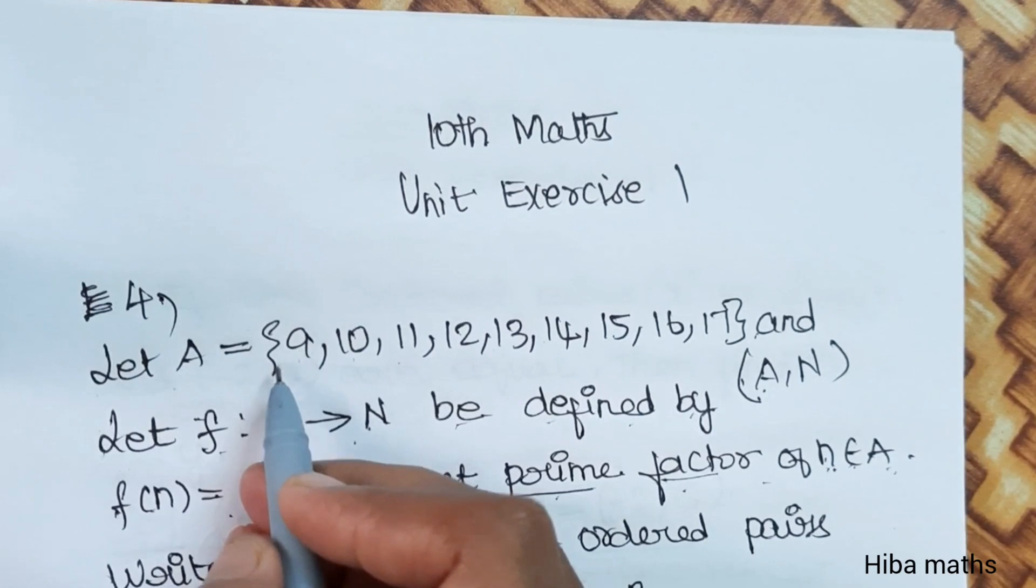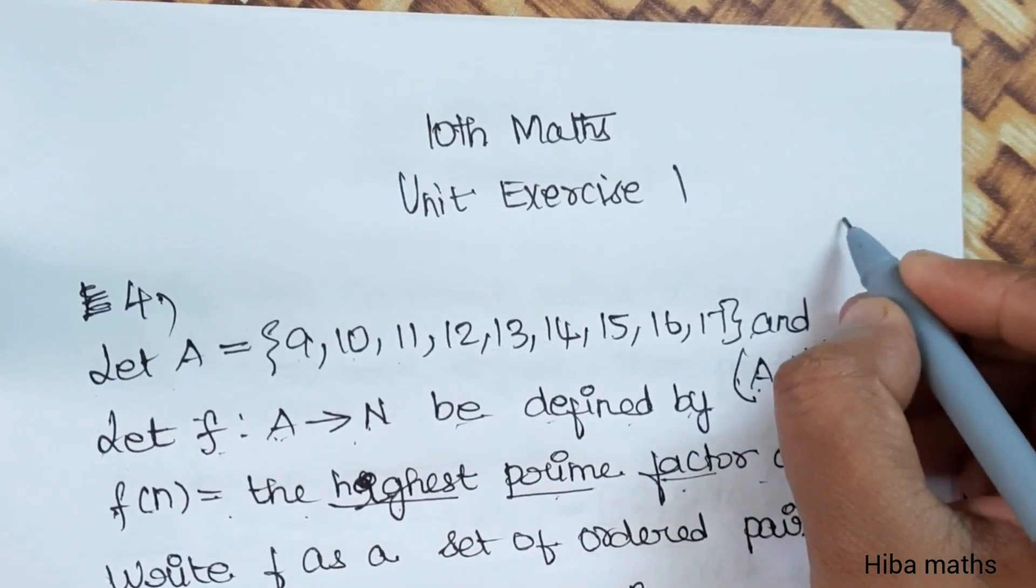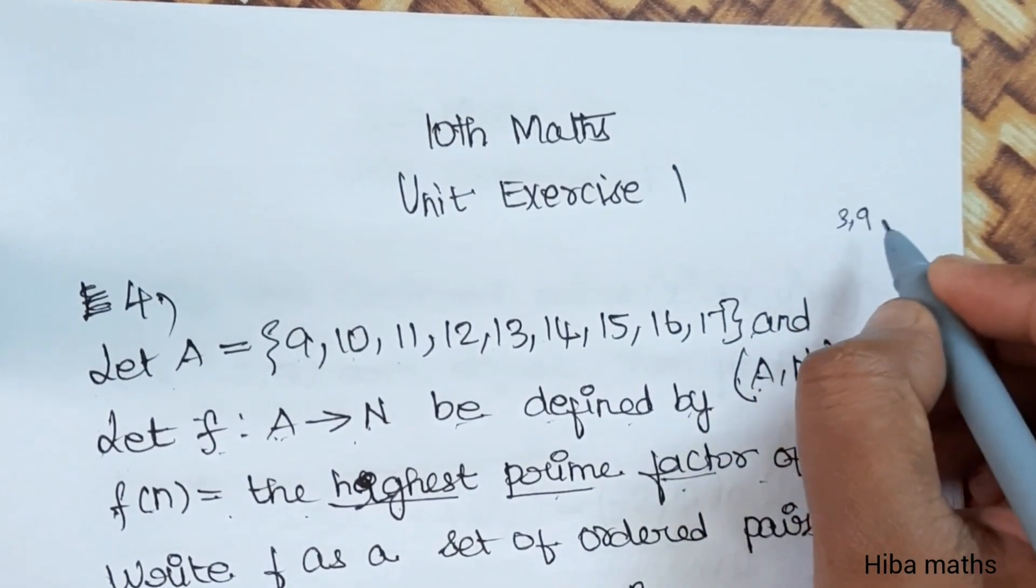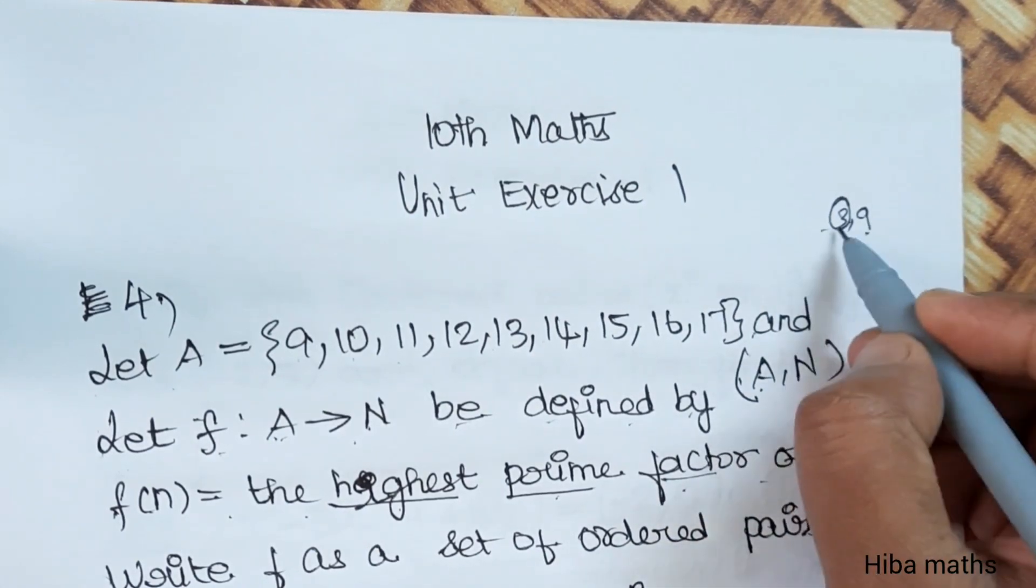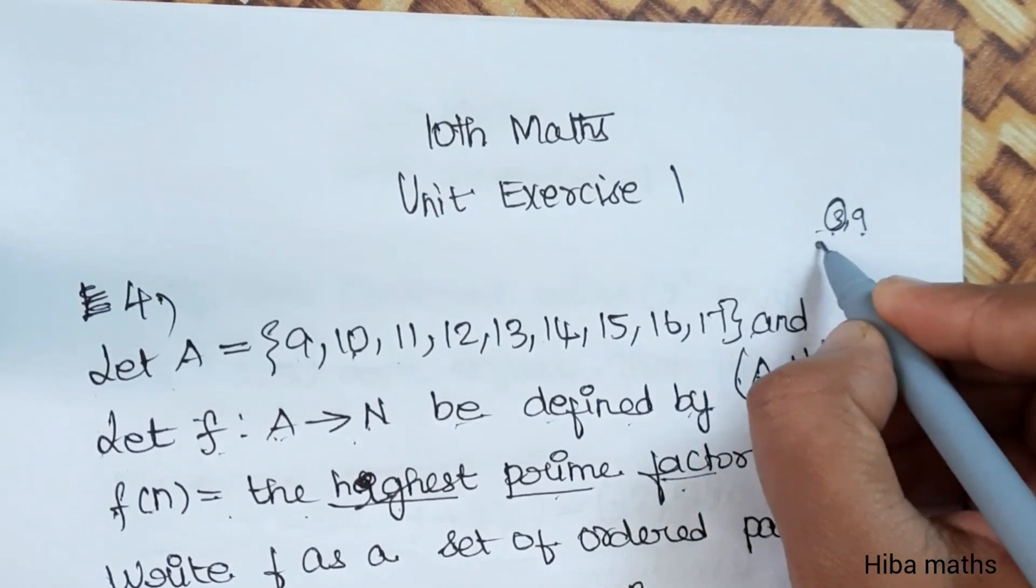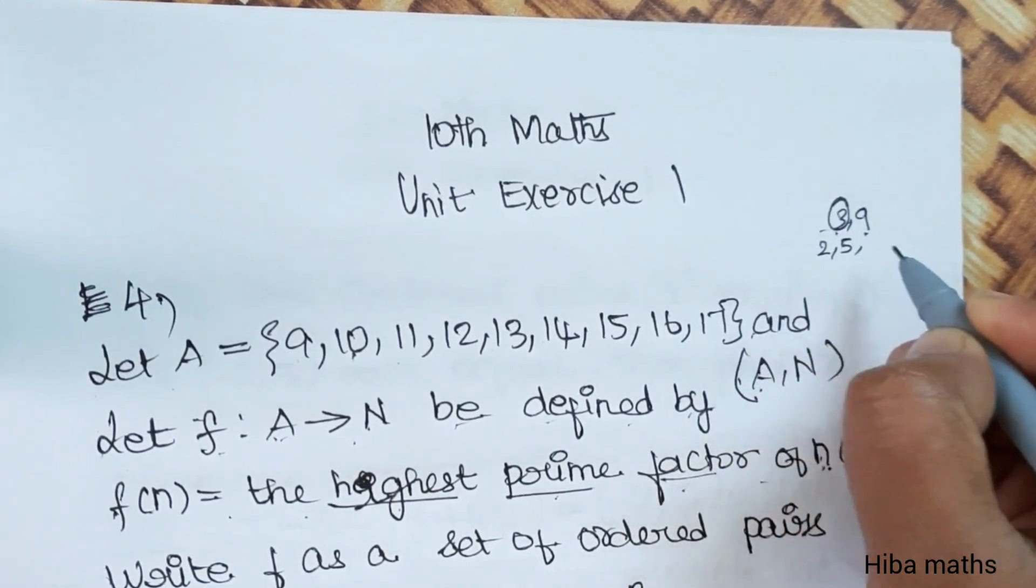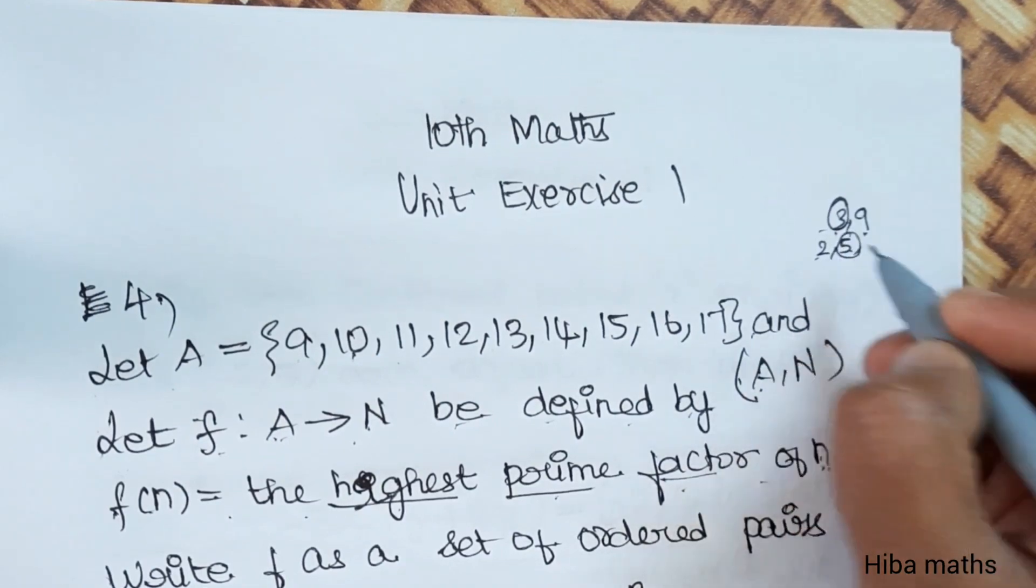What is the highest prime factor of 9? The prime factor of 9 is 3 times 3. The prime number is 3, so the highest prime factor of 9 is 3. The highest prime factor of 10 is from 2 table and 5 table, the highest is 5.